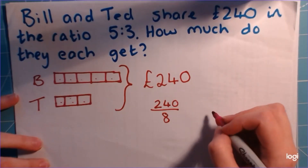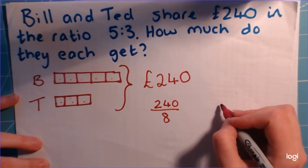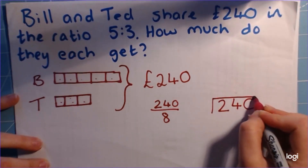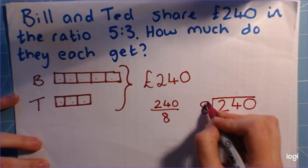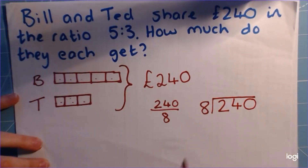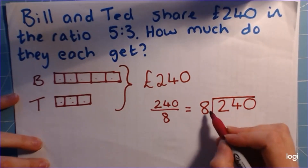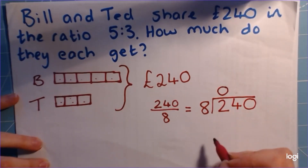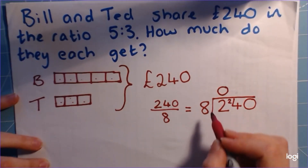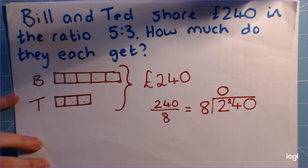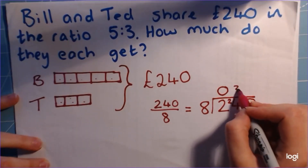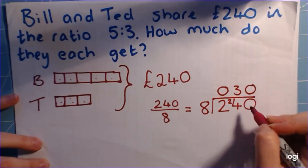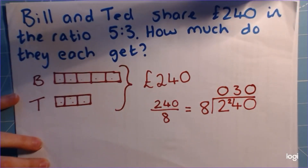Ideally we can do this without using the calculator, because it's a really nice chance to practice doing the bus stop method. So we've got 240 divided by 8. 8s go into 2 — they don't go, so we carry the 2 forward. 8s into 24 gives us 3, and 8s into 0 — there are none. So 240 divided by 8 is 30.